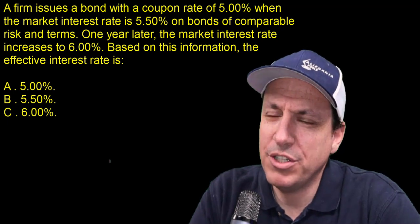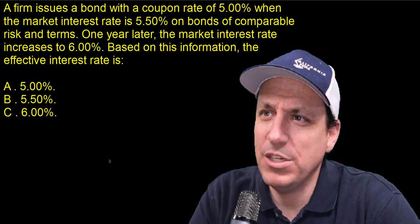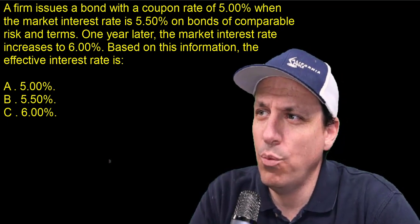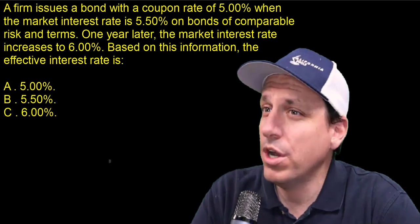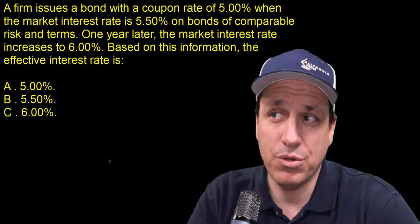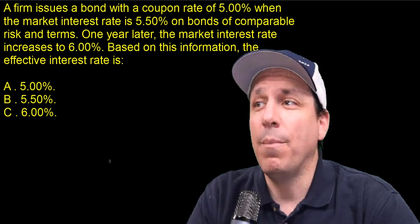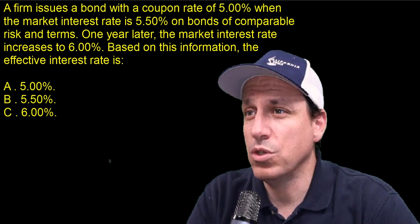So this is a bit of a silly question, but we're going to go through it anyway. A firm issues a bond with a coupon rate of 5% when the market rate of interest is 5.5% on a bond of comparable risk and terms.